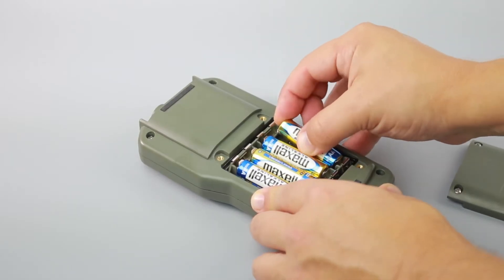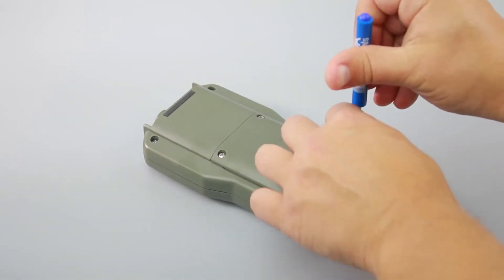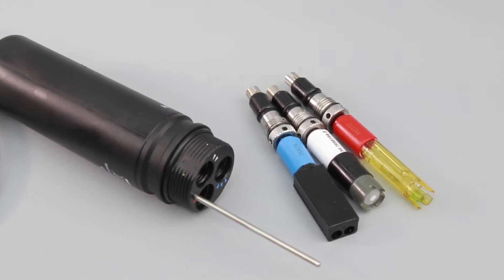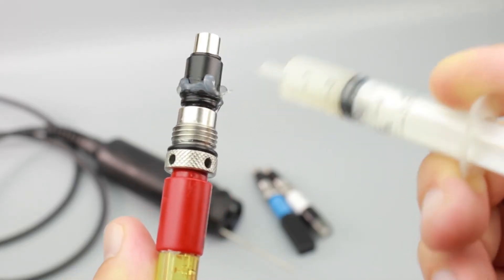To set up the meter, first install the batteries. Then connect the sensors to the probe. To do this, lubricate the sensor o-rings with the supplied grease and match the sensor to the probe slot.